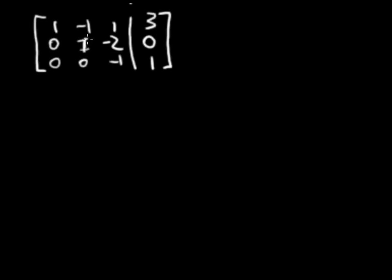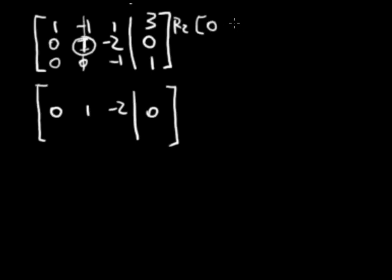So now I need this to be a leading 1. And so I'm going to clear the column. And I'm going to go ahead and rewrite row 2: 0, 1, negative 2, 0. And I'm going to try to clear out this negative 1 from row 1. And I'm going to do that by manipulating row 2 by adding row 2 to row 1. So row 2 is simply just 0, 1, negative 2, and 0.